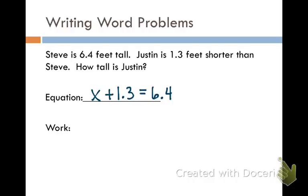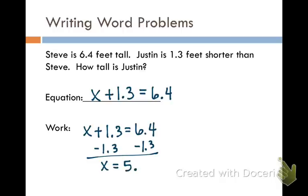So now we're going to solve this. Here I have x plus one point three. I need to get rid of the one point three. And I'm going to use inverse operations. Since I have a plus sign, I'm going to subtract it on both sides. And I will get five point one. So Justin must be five point one feet tall.